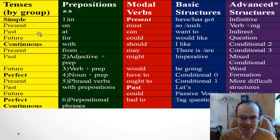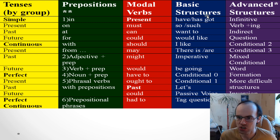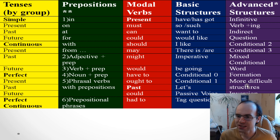To sum up: start with basic things, start with tenses, then learn more difficult tenses, pay attention to prepositions, don't ignore modal verbs — it's an essential part of English grammar. You also need basic structures for a strong intermediate level. The more structures you know, the better, and if you're serious about an advanced level, you need to know all these advanced structures.